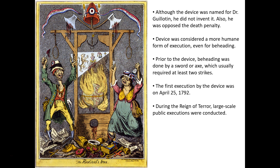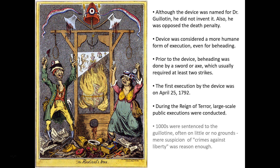People brought wine to consume and made it into a big party — a very disturbing crowd reaction. Thousands were executed by the guillotine — 17,000 — often on little or no grounds. Sometimes all it took was mere suspicion of being against the Revolution for you to be swept up in the fervor.